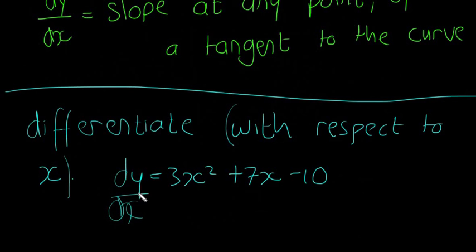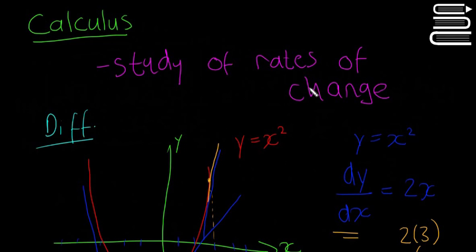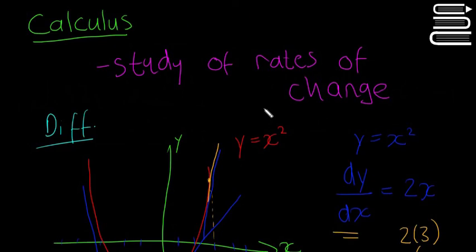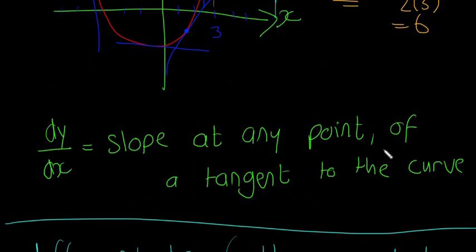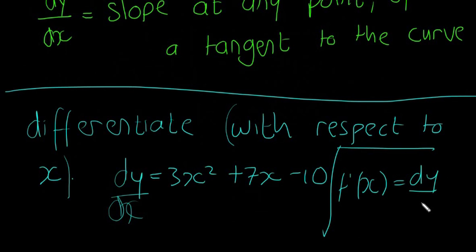You're just going to use your dy/dx which we'll go through in the next few videos. So differentiate with respect to x just means differentiate. So hopefully that all made sense, that's just kind of an overview of what calculus, what differentiation is. So it's a study of a rate of change, so the tangent is the rate of change. Once you get dy/dx, which is the slope at any point of a tangent to the curve, the slope of the tangent at any value of x. And the last point - f dash of x is equal to dy/dx, it's just different notation, different ways of writing the same thing. I hope that made sense and we're going to start looking at the rules of differentiation next.